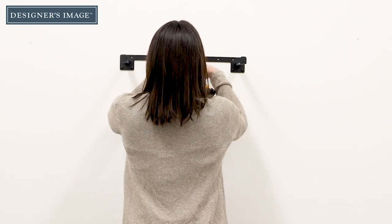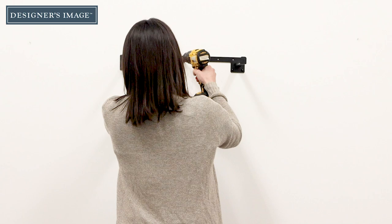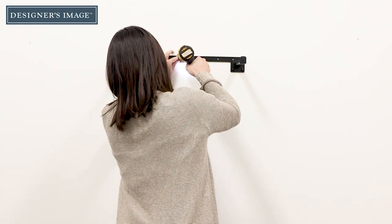Using a power drill or screwdriver for Phillips head screws, drive provided screws into the stud or anchor, securing the bracket to the wall.